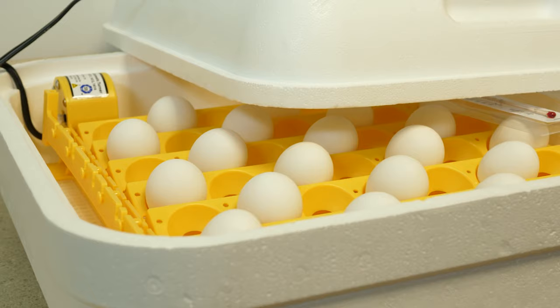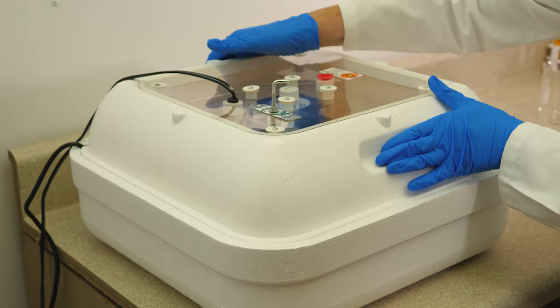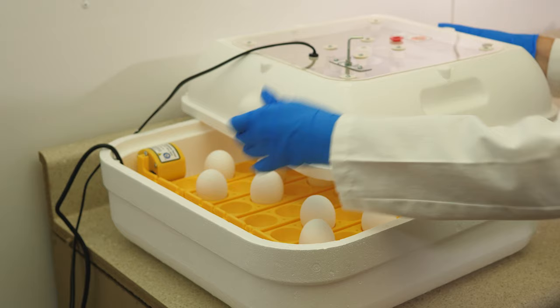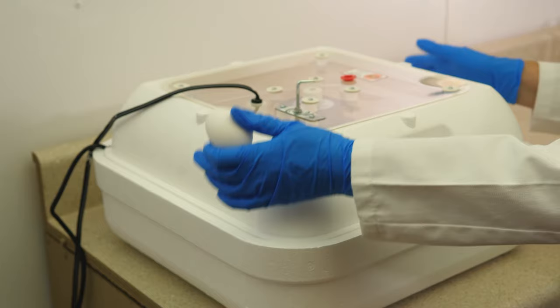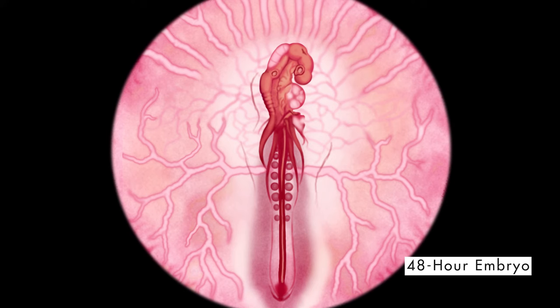After the eggs have incubated for 48 hours, we are ready to see the next stage in the development of the chicken embryo. To see the embryo, we need to follow the same steps we followed to prepare the 24-hour embryo. Here is what the chicken embryo looks like after 48 hours in the incubator. At the anterior end of the embryo, we can see that the neural fold is developing into the forebrain, midbrain, and hindbrain of the chick.